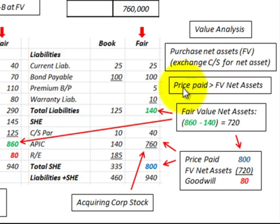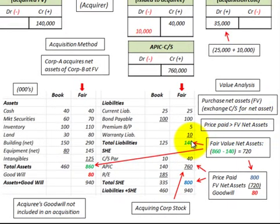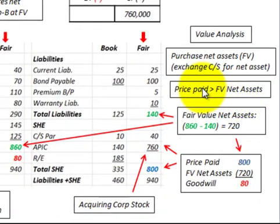Our first scenario is where the price paid is greater than the fair value of the net assets received. To determine the fair value of the net assets, we look at $860,000 worth of total assets at fair value, and then subtract the fair value of total liabilities of $140,000, giving us $720,000 of fair value for our net assets. Because the price paid is greater than the fair value of net assets received, there's goodwill involved.